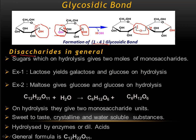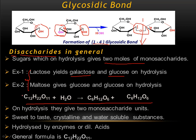Now let's go to the properties of disaccharides. Disaccharides contain two sugar units. On hydrolysis they give two moles of monosaccharides. Maltose on breaking down gives two glucose units. Lactose on hydrolysis yields galactose and glucose, because lactose is made of one mole of galactose and one mole of glucose.